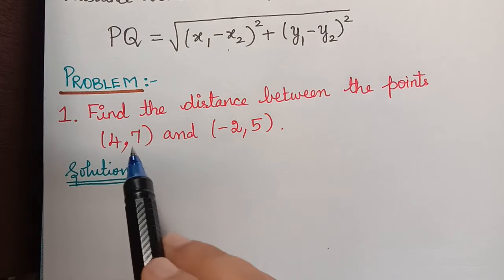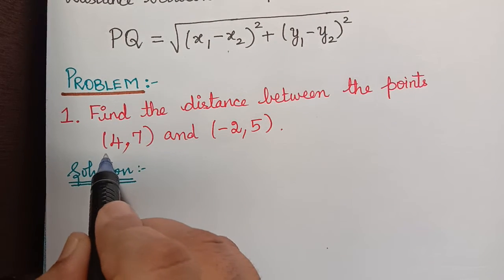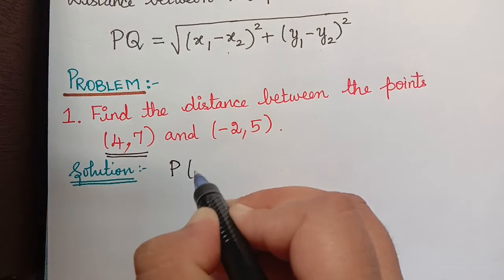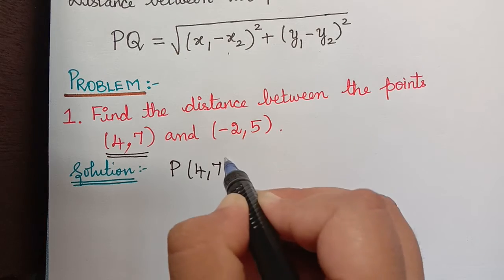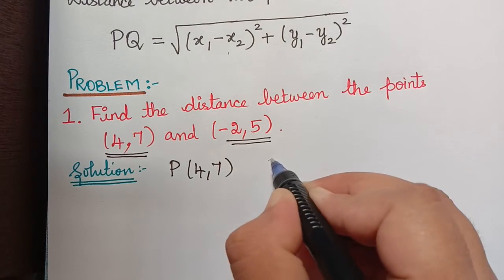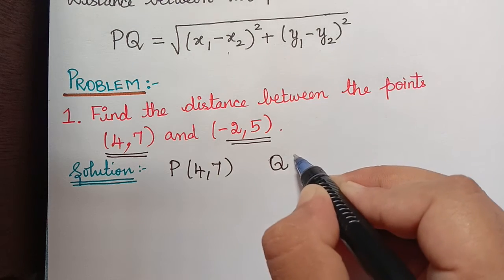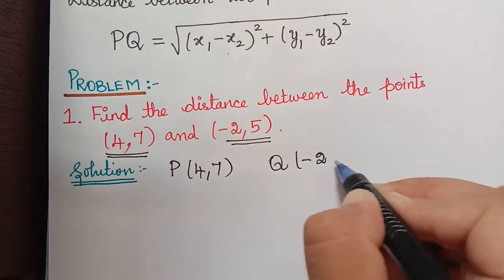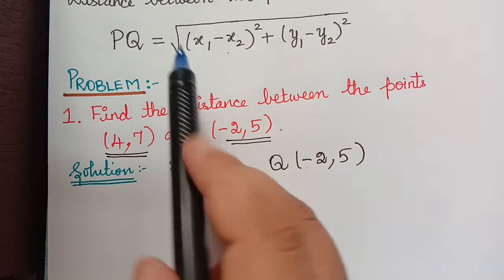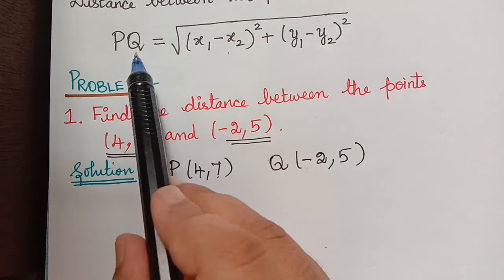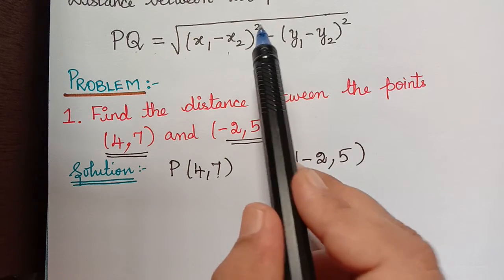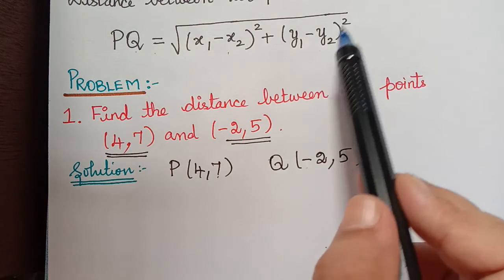First let us name them. Let us name the coordinate 4 comma 7 as point P, and the coordinate minus 2 comma 5 as point Q. We have to find the distance between these two points, which is given by the formula PQ equals square root of (x1 minus x2) whole squared plus (y1 minus y2) whole squared.